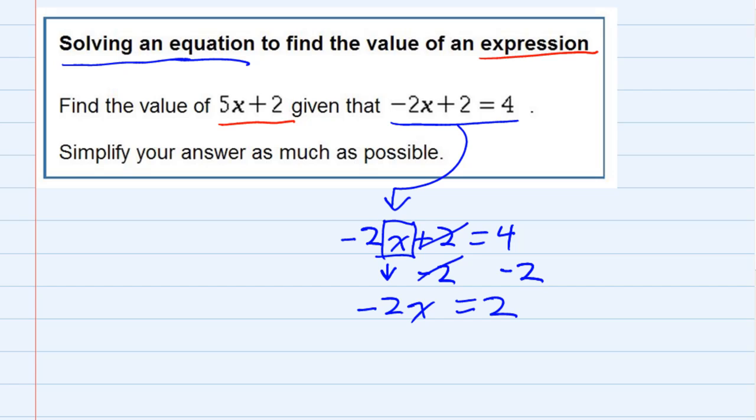Then the last step to get the x by itself, I need to undo multiplying by negative 2, and I undo that by dividing by negative 2. Again, I've got to do it to both sides since they're equal. The minus 2s both cancel on the left-hand side, leaving me with just x. And the right-hand side, 2 divided by negative 2 is negative 1.